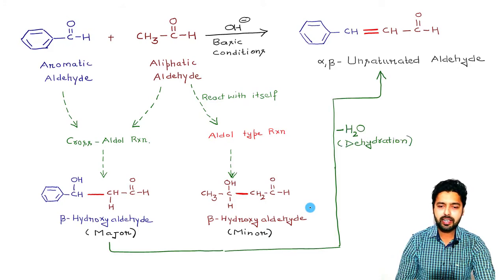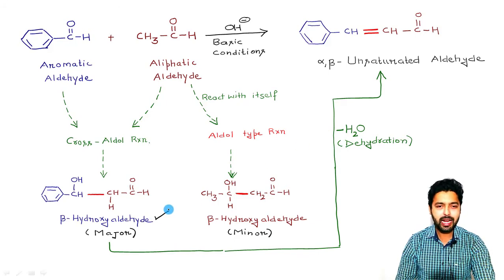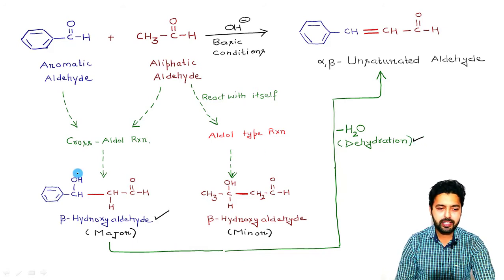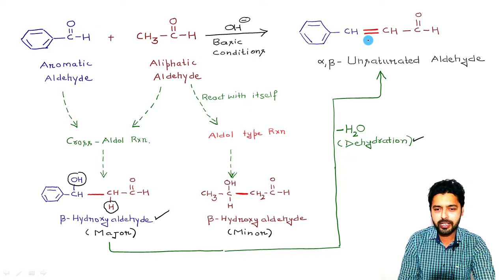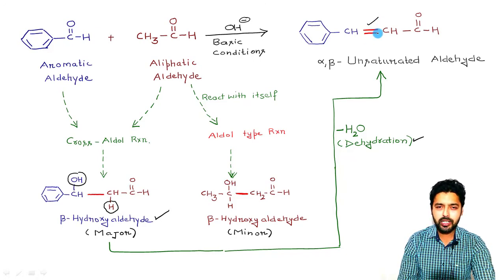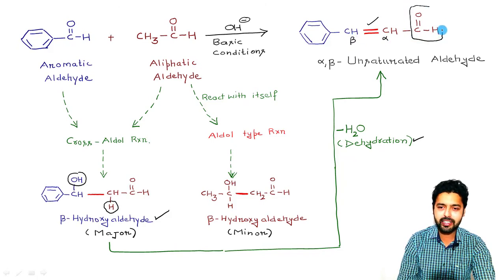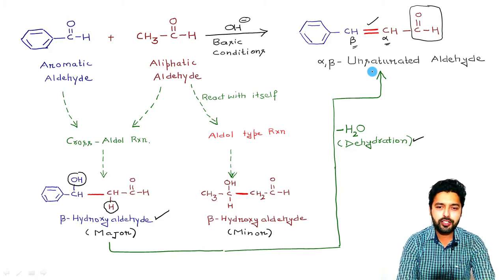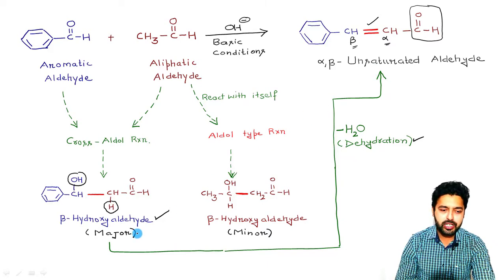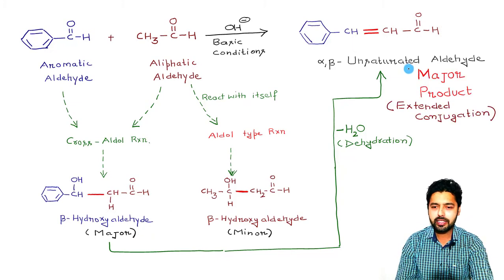Under the basic conditions, a molecule of water will be going out from this beta-hydroxy aldehyde in a dehydration type of step. The OH will be going out from here and the hydrogen will be moving out from here, giving a double bond at this position, so that we will be having the alpha-beta unsaturated kind of aldehyde. This is the aldehyde here, this is the alpha position, this is the beta position. This alpha-beta unsaturated aldehyde molecule is generated from the major intermediate, which is the reason why it will be formed in the major amount.